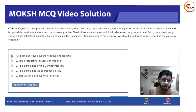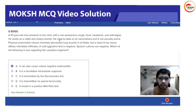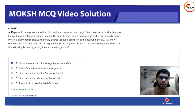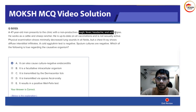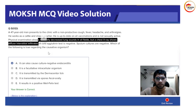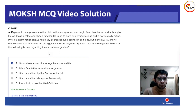For questions like these, when given that the patient is a cattle or sheep rancher with fever, cough, headache, and arthralgias, along with an interstitial pneumonia-like presentation — diffuse interstitial infiltrates — and a negative cold agglutinin test, this presentation is very classic for Q fever.